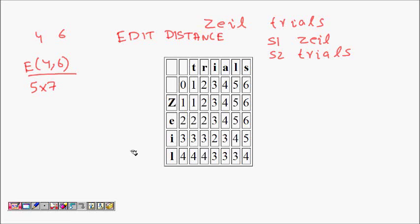In this lecture we will look at one example of how edit distance works. We will use dynamic programming to solve this problem — basically we want to find how many operations are required to convert 'zeal' into 'trials'. We will look at the recursive formula: e(i, j) is the minimum of...